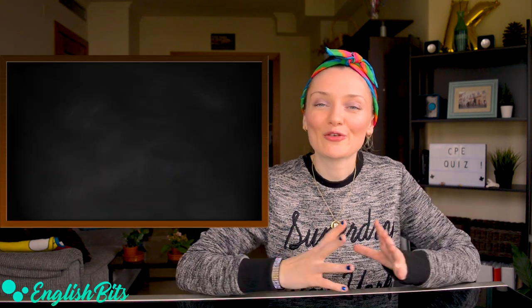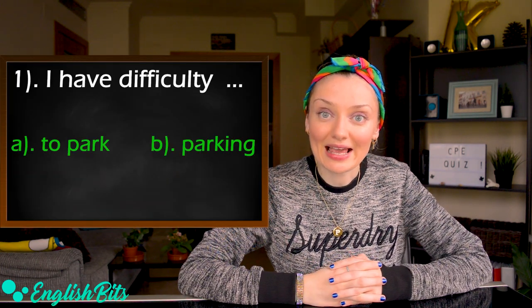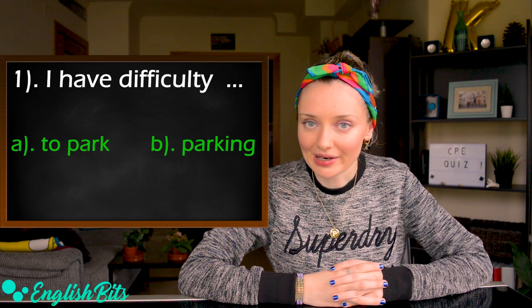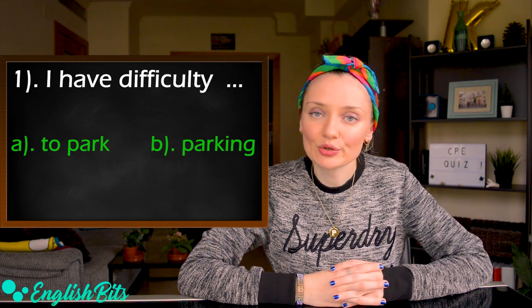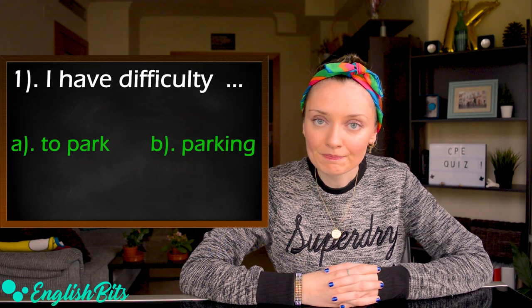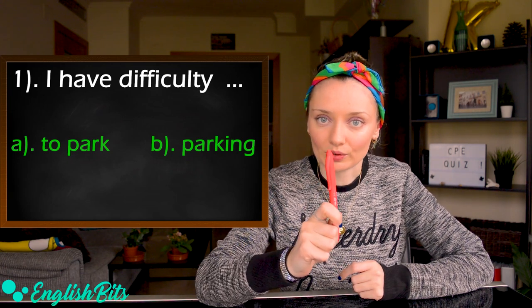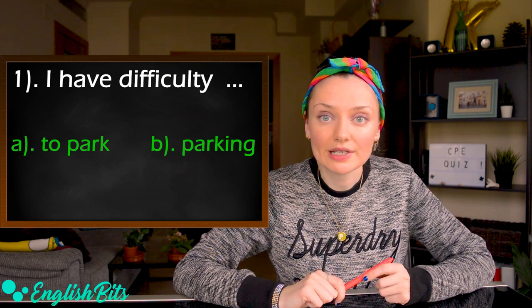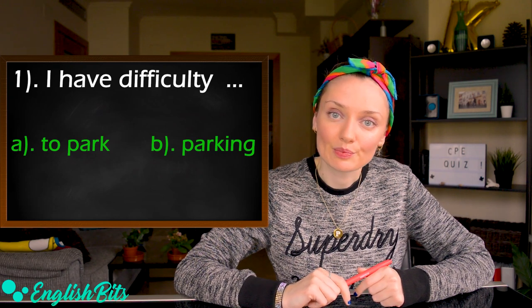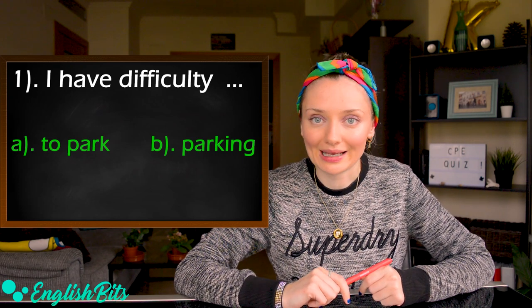Sentence number one: I have difficulty — A) to park, or B) parking. Choose the correct answer A or B and write it down.